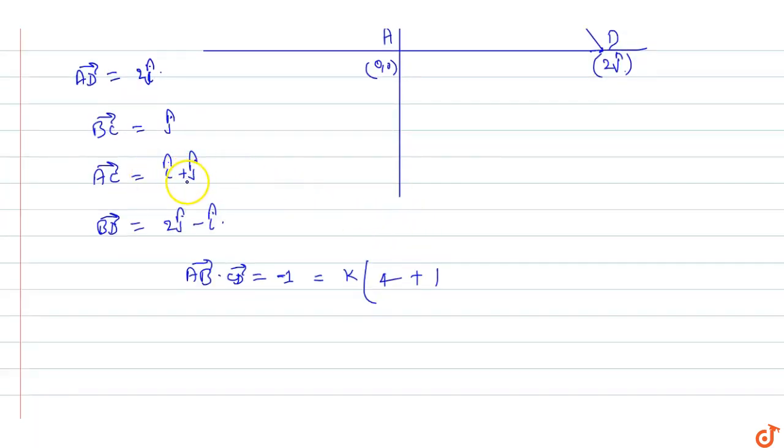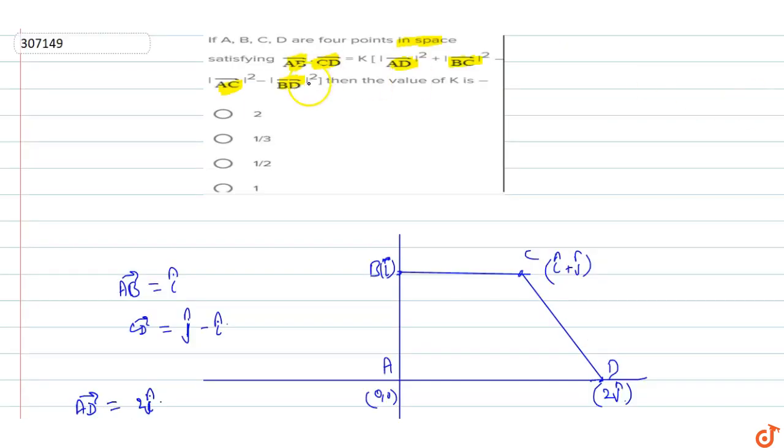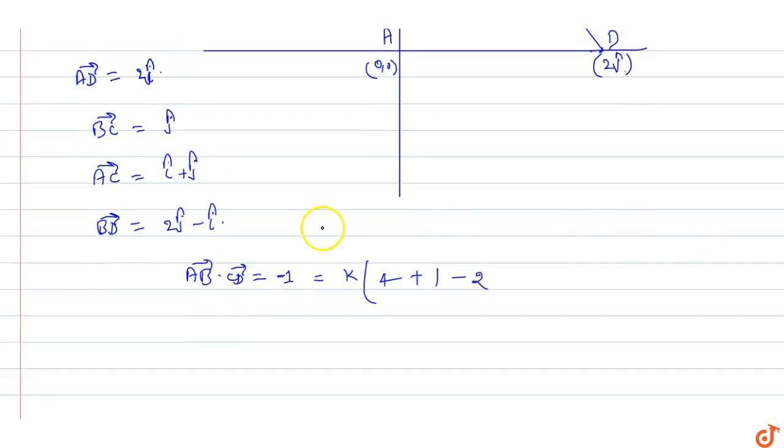This is 2. Minus BD vector. BD vector mode is root 5, so root 5 whole square is 5. Then the value becomes minus 1 equals 4 plus 1 is 5.